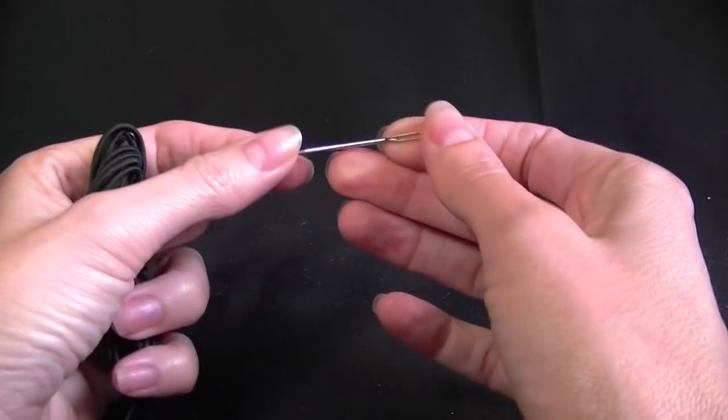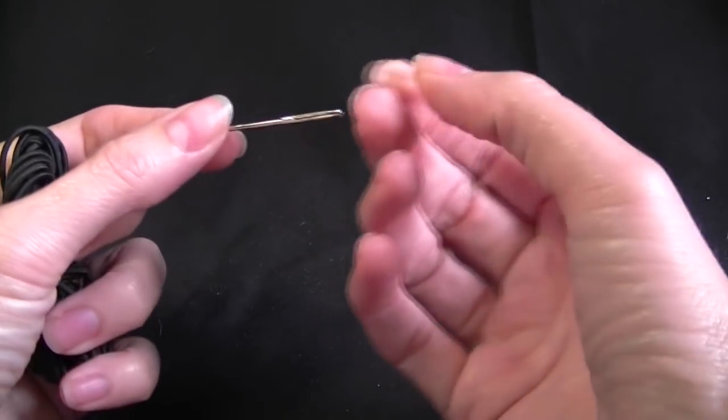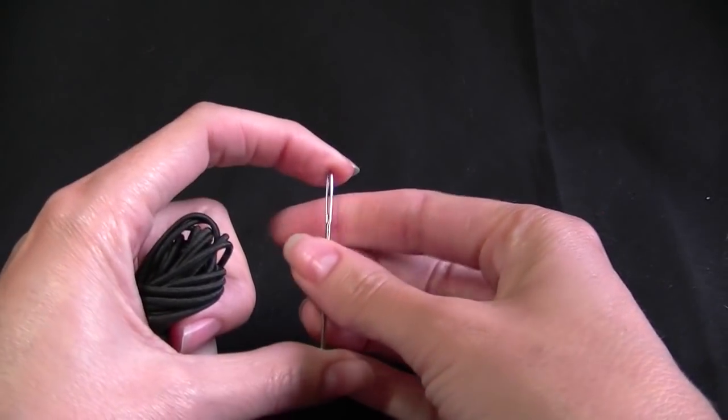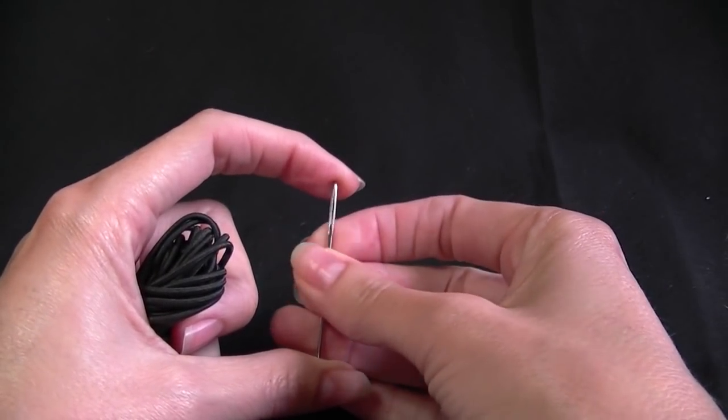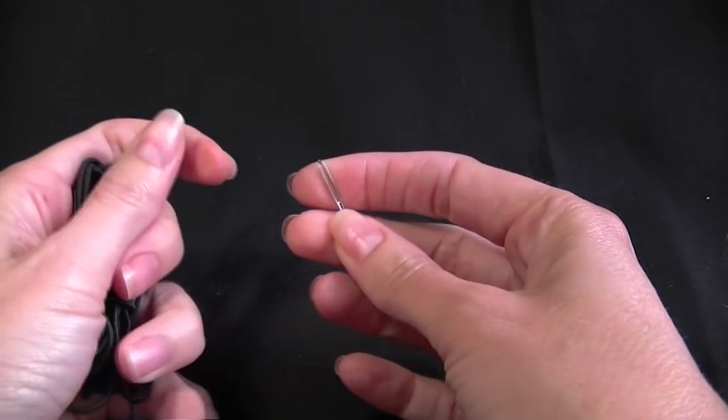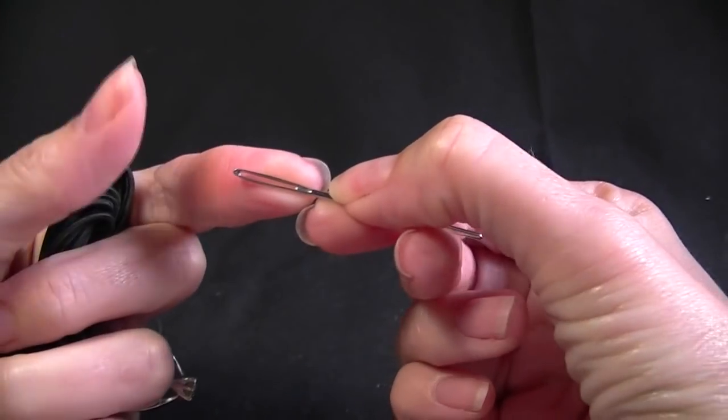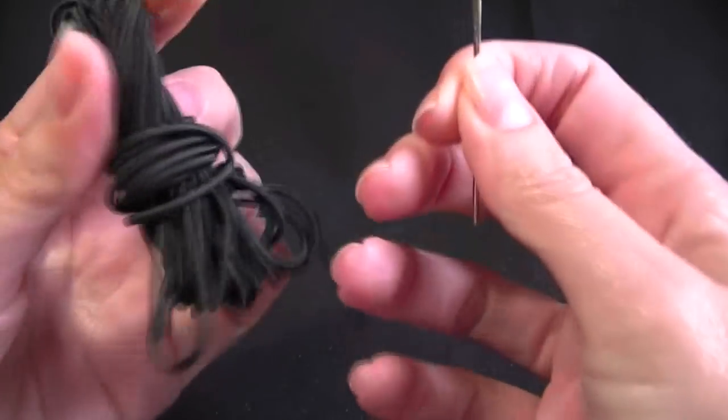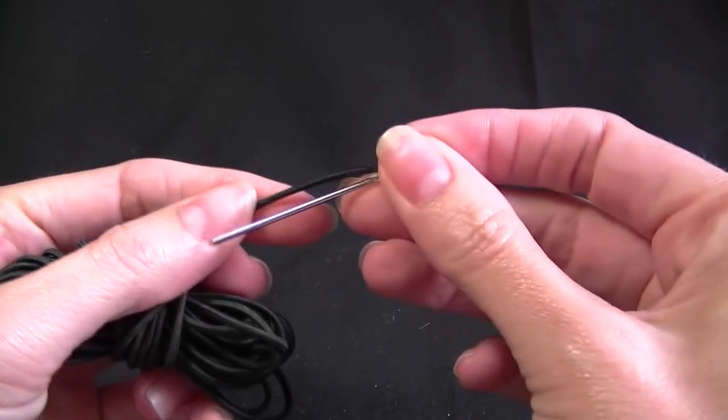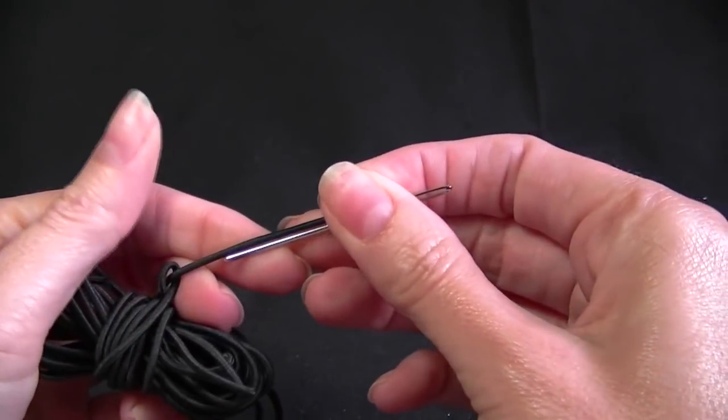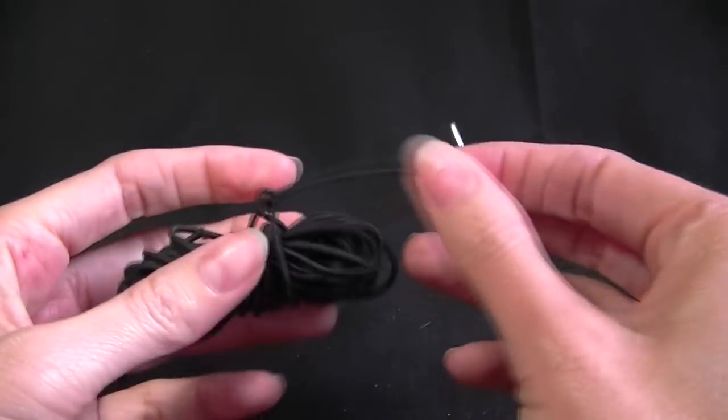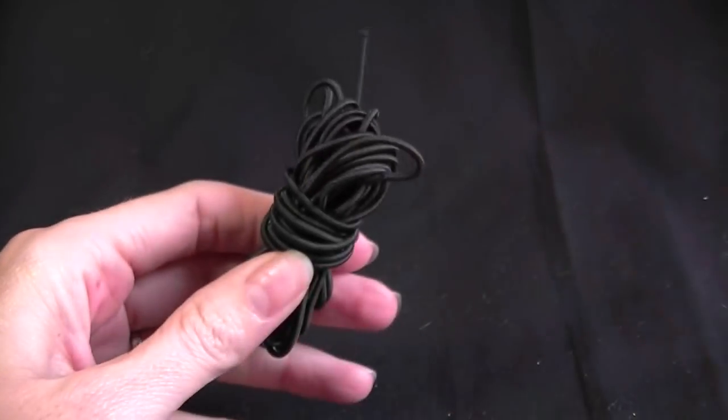For this project you're going to need yarn of your choice. I'm using 8 ply which is equivalent to double knit or sports weight. I'm also using a hook that's recommended for that. You can use any yarn and hook you like, worsted weight, just make sure you use the hook that's recommended. You're going to need a sewing needle with a large eye and also some elastic. I think this one is called hat elastic. It's not very thick. We're going to use this to go around the bottom edge of our bag bag. You're also going to need a sharp pair of scissors.